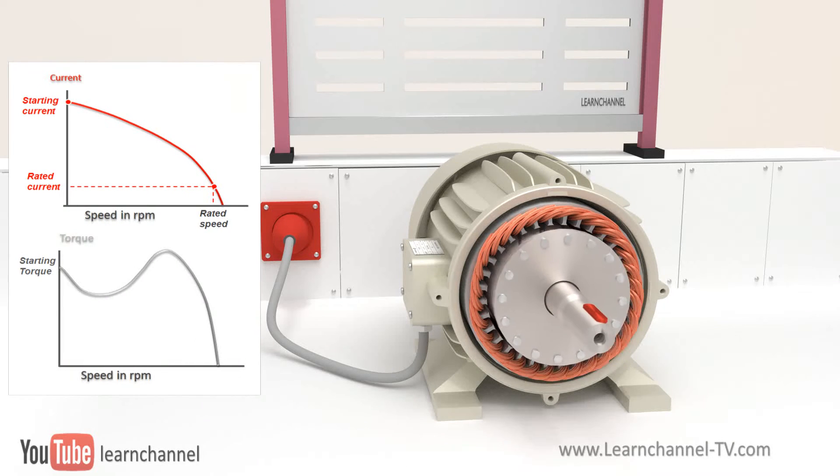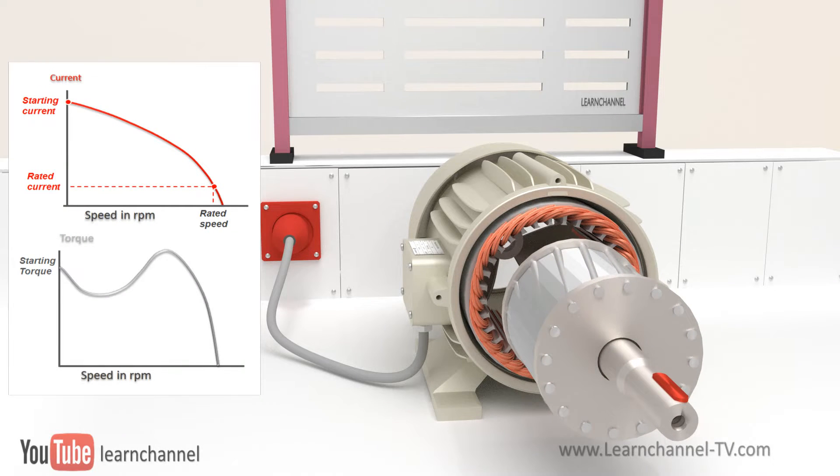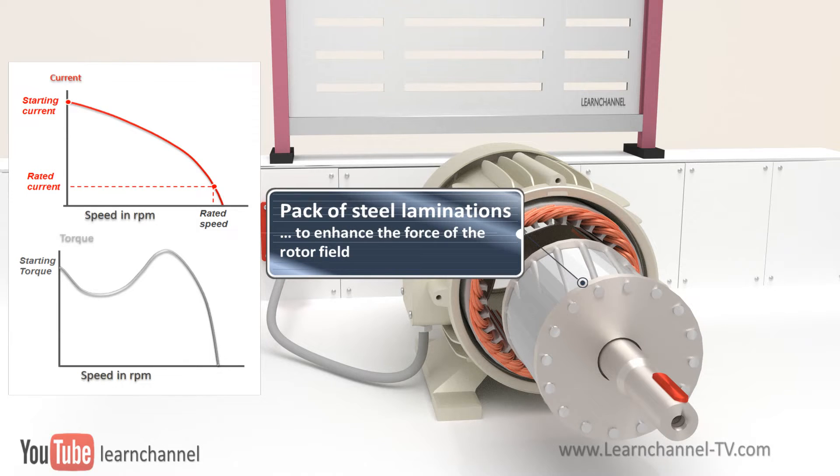So when switching on this motor, high voltage is induced within the rotor winding leading to high starting current, which can be up to ten times its nominal value. For large three-phase induction motors, this might be a real problem.